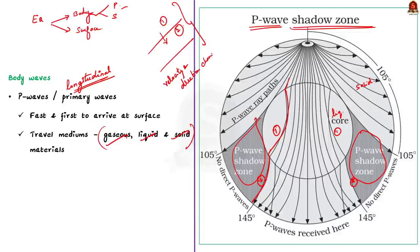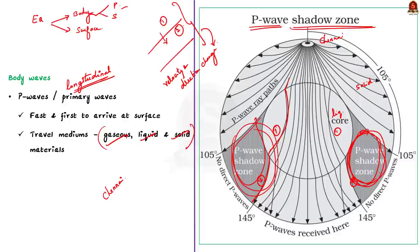Let us say an earthquake is taking place near Chennai. The P waves generated by the earthquake would travel in all directions around the globe. But due to refraction, there will be a shadow zone in some other part of the world where P waves from the Chennai earthquake would not be recorded in the seismograph kept there. The shadow zone of P waves is 80 degrees — 40 degrees on one side and 40 degrees on the other side.